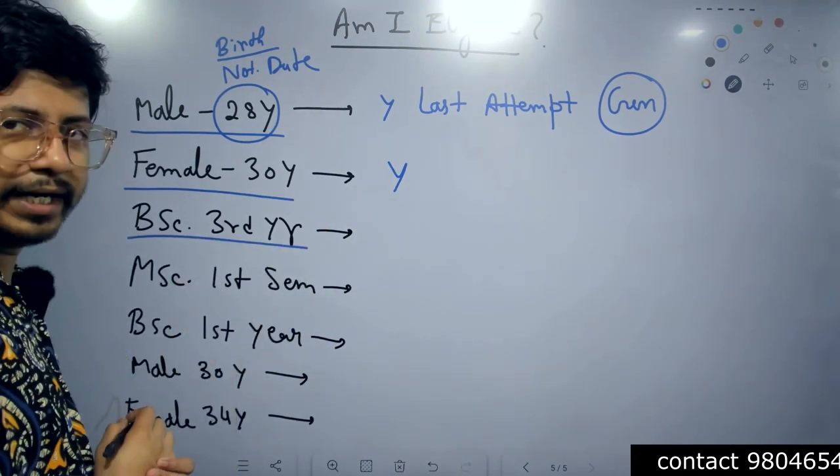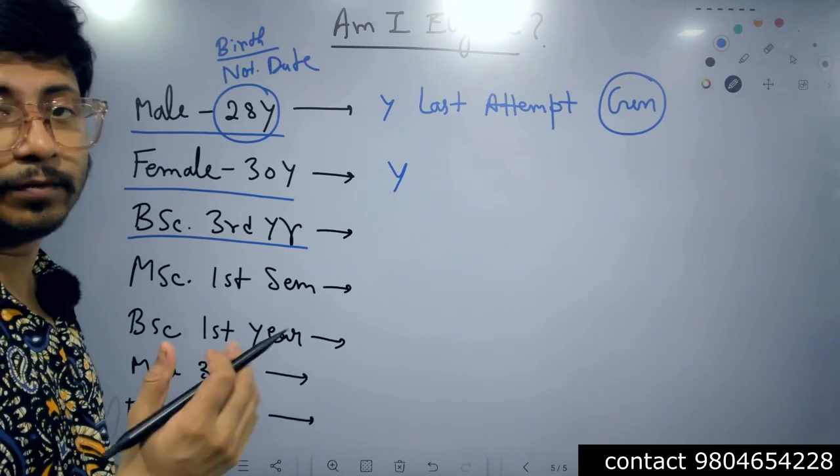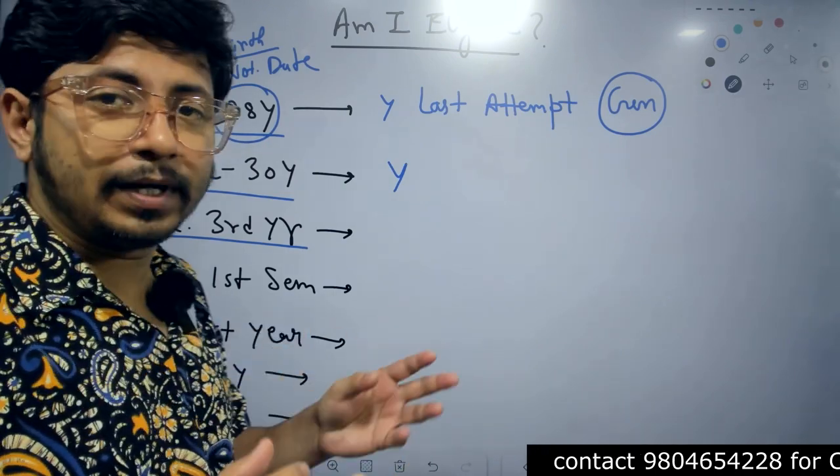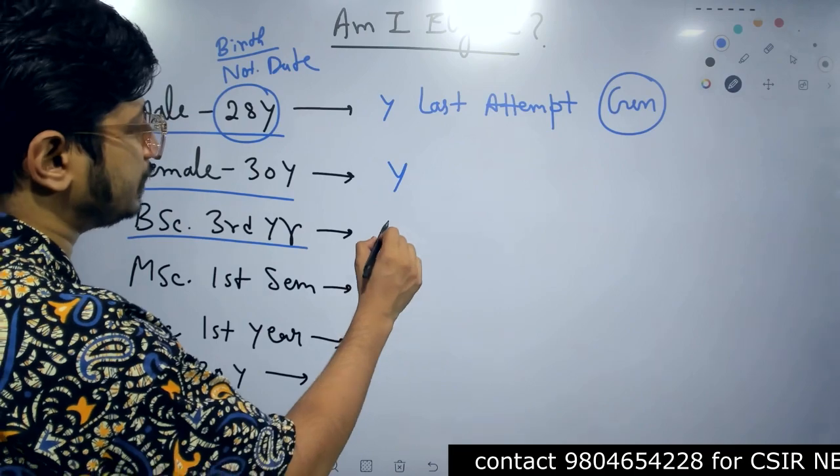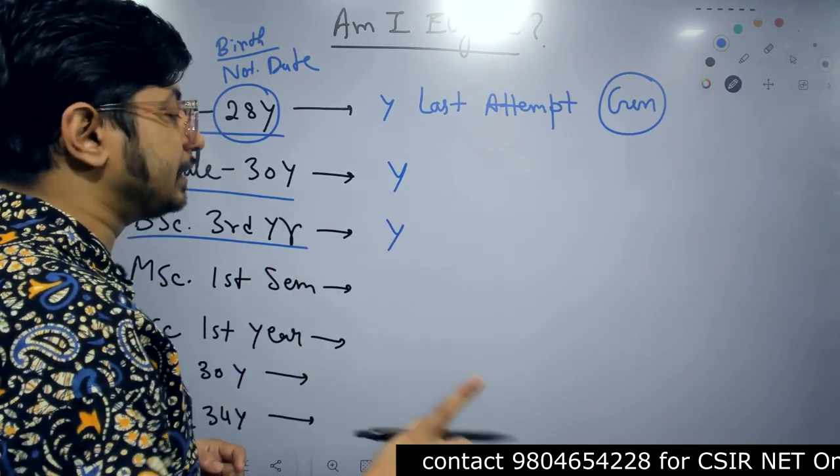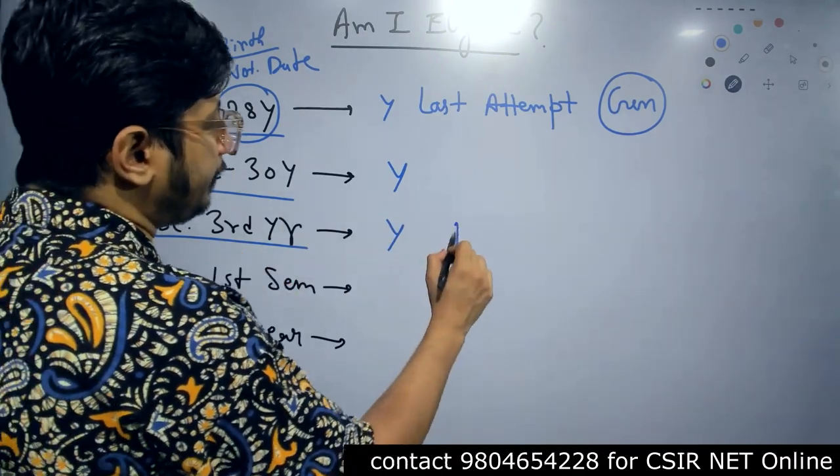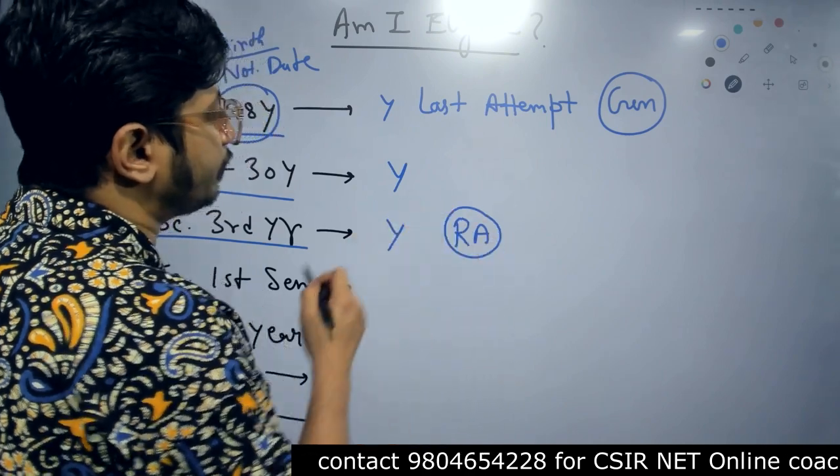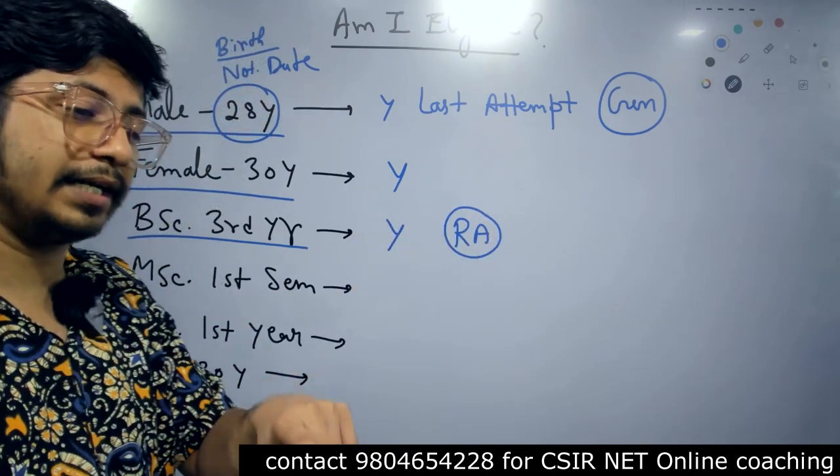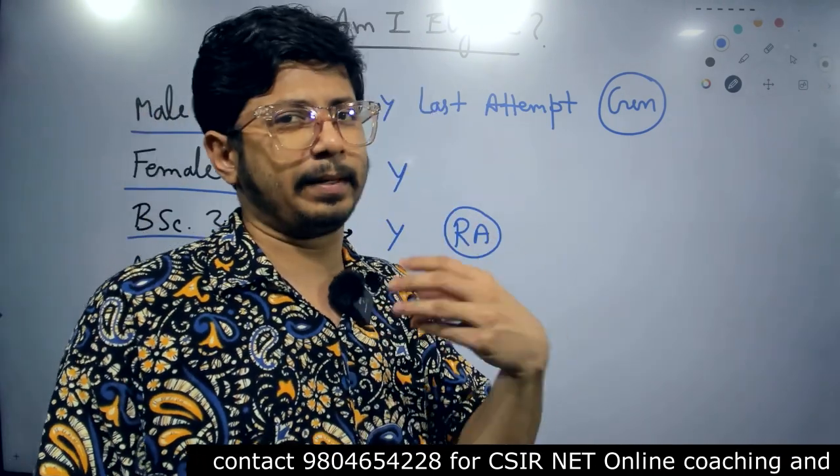BSc third year student, are you eligible or not? There are plenty of BSc students who had a wrong idea that they are not eligible. Actually, from third year onwards, you are eligible. But the thing is, you will be result awaited category. You do not have any results. So from BSc third year onwards, you are eligible, but it is better to start from MSc first semester.